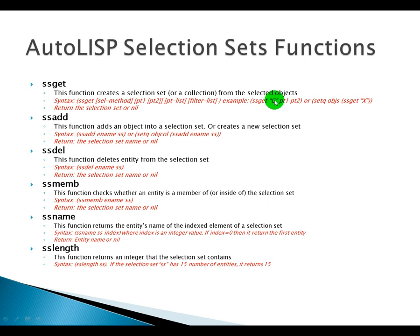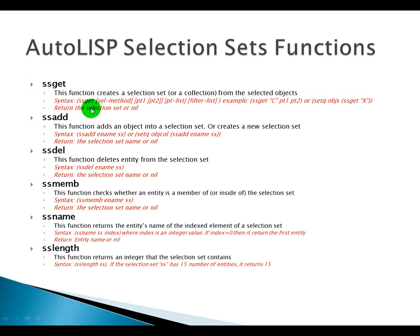If we want to use the filter list, we can make use of a command like: (setq objs (ssget "X" filter-list)). The 'X' mode means we are selecting the entire database, including objects on layers that are off, frozen, or even outside the visible AutoCAD screen — every single AutoCAD object. The return value is the selection set, or nil if no objects are selected.